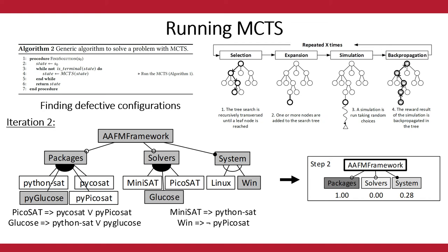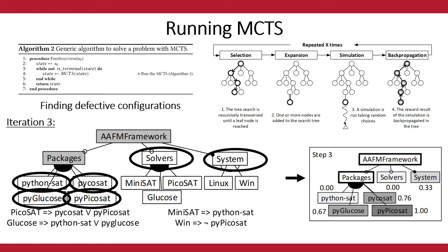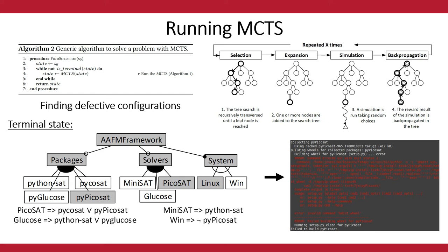After the simulations, we aggregate the results and select the best performing feature — in this case, the package feature. We repeat the process, but now with additional information: a defective configuration is more probable if we select the package feature. So Monte Carlo Tree Search will explore this part of the feature model in more detail, running more simulations here while also considering others following an exploitation versus exploration tradeoff. The algorithm stops when a terminal state is found — a complete configuration with errors.